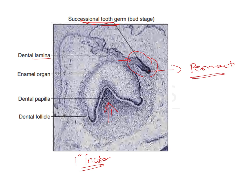The successional tooth germ always lies in close proximity to the primary tooth germ. When the primary tooth erupts into the oral cavity, this tooth germ lies close to it. There is a connection between this tooth germ and the lamina propria of the oral mucous membrane. In the successional tooth germ, this connection with the oral mucous membrane is maintained, and that is known as the gubernacular cord.